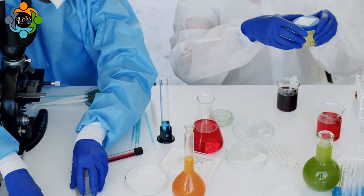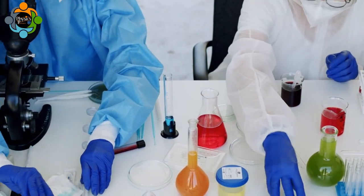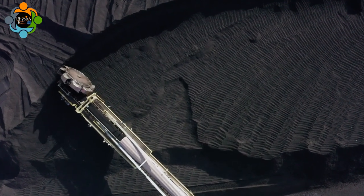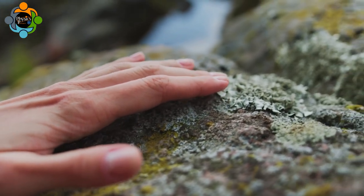We can use the specific gravity of a substance to compare it with the specific gravity of a pure substance to identify any impurities or contaminants. Another application of specific gravity is in the field of geology. Geologists can use specific gravity to differentiate between different types of rocks and minerals.